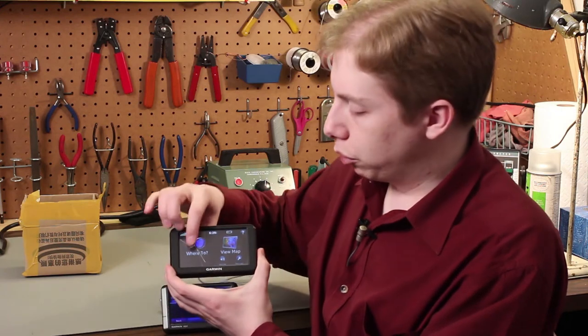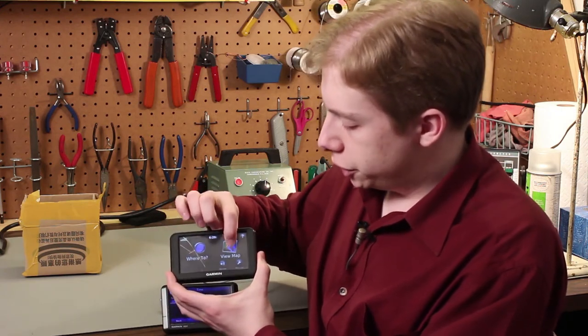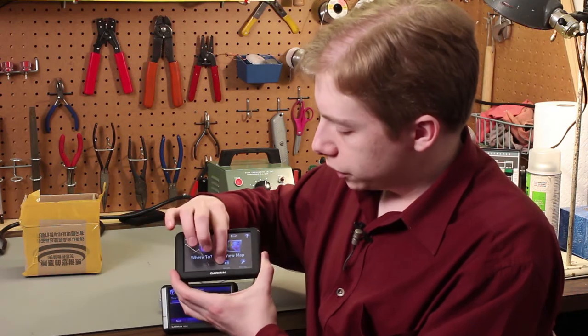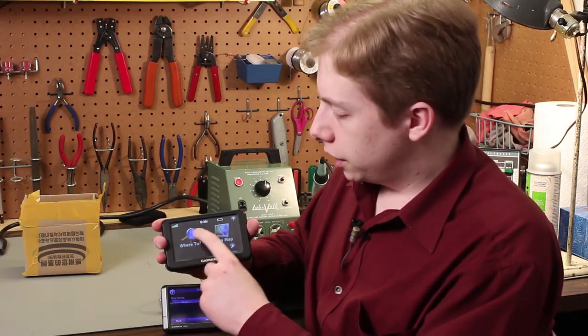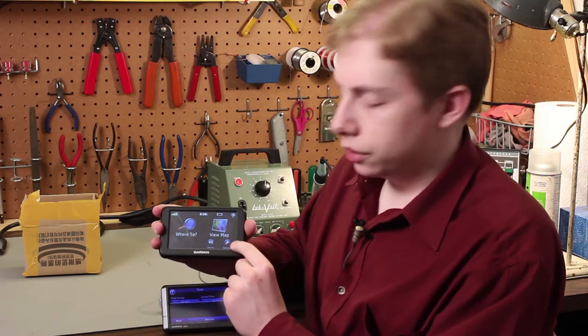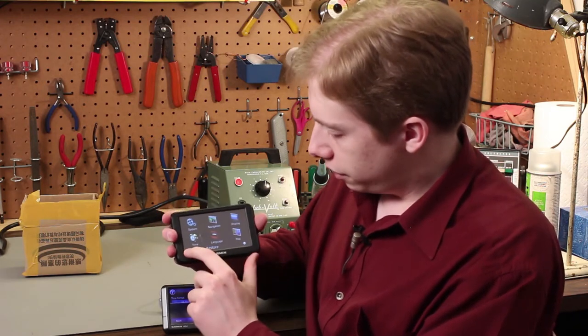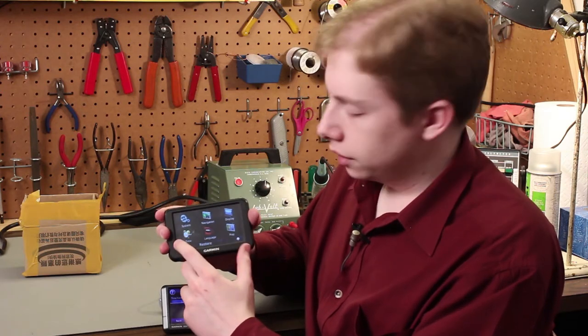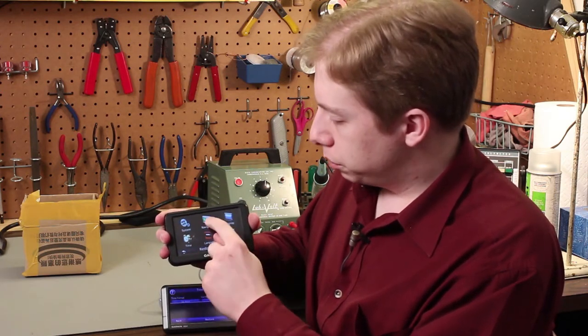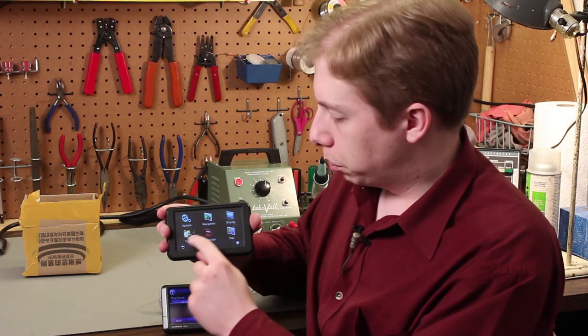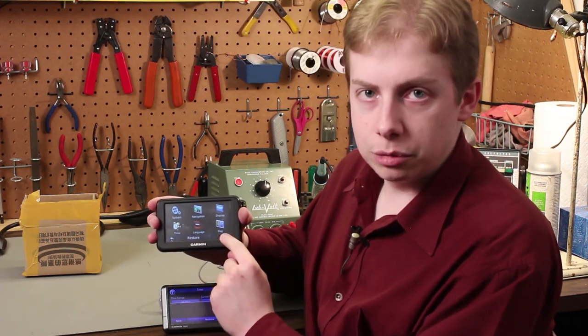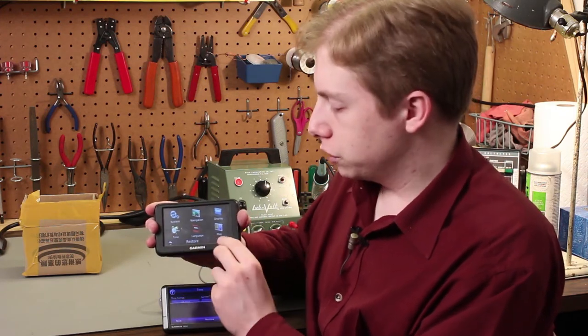On this GPS with the broken digitizer, because the digitizer is broken, I can touch wherever I want, but the GPS is not doing anything when I touch it. It almost did there, but for the most part, I can't press any of the buttons on this GPS receiver because the digitizer is broken.